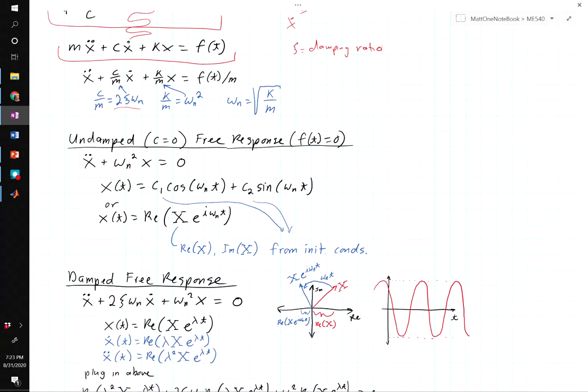For an undamped case we won't worry about the dashpot and we won't worry about the force for a free response case. So we just have this differential equation, and the solution to that equation is some constant times cosine ωnt and some constant times sine ωnt. That explains why we use this definition here. The natural frequency shows up as the oscillation rate for the system. You would use the initial conditions to figure out what those constants c1 and c2 are.